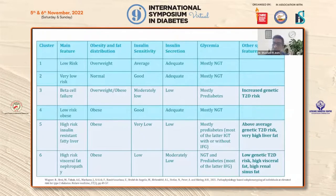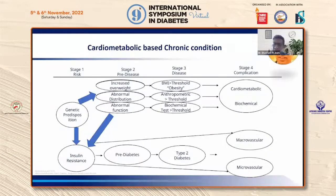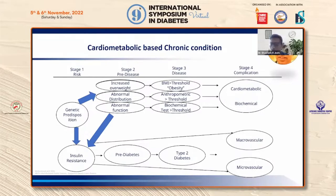Another cluster features obesity with low insulin sensitivity, borderline insulin secretion, and predominantly renal sinus fat with renal failure risk. When looking at chronic conditions, stage 1 is genomic predisposition and family history; stage 2 is pre-disease with overweight, abnormal fat distribution, abnormal fat function, and insulin resistance. Stage 3 — using BMI threshold gives obesity, using anthropometry gives thin-fat Indians, and using biochemistry gives type 2 diabetes. Stage 4 is cardiometabolic and biochemical complications, ultimately leading to macro- and microvascular disease.